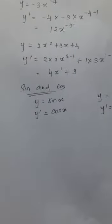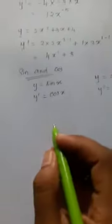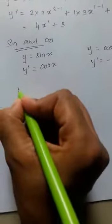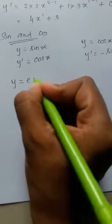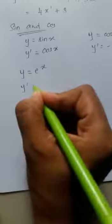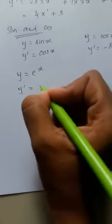A couple more rules which we have to know about differentiation. When we get y equals e to the power x, the derivative will remain the same because it is a constant value, so e to the power x.